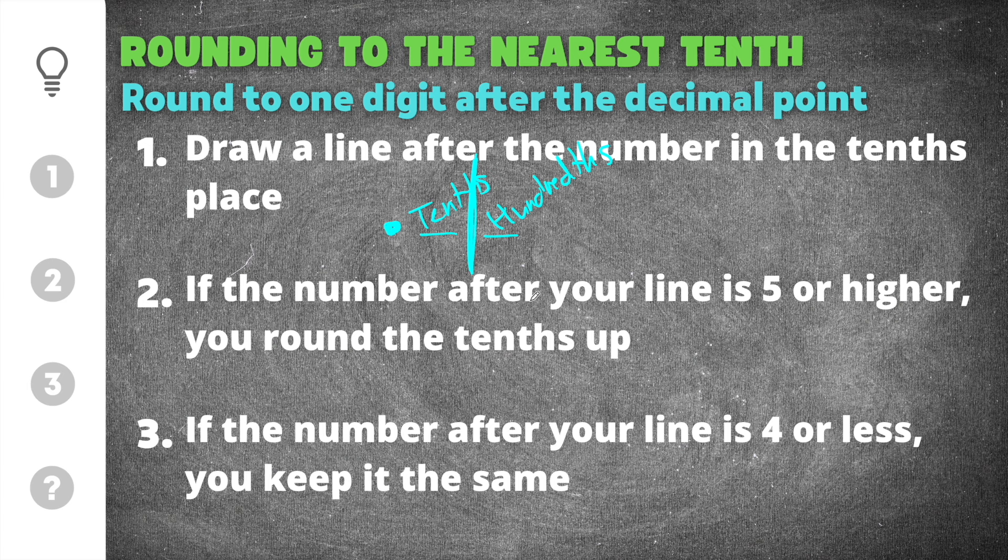The second thing we need to remember is that if the number after our line is five or higher, you round the tenths up. So if the number in the hundredths place is five or higher, which would be five to nine, you're going to round up.